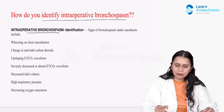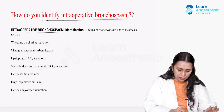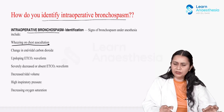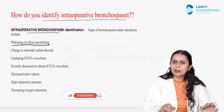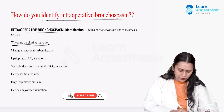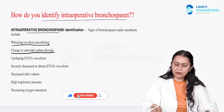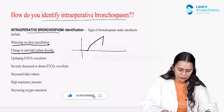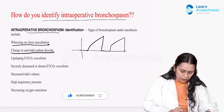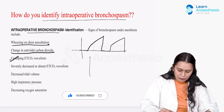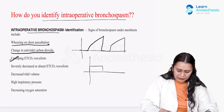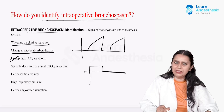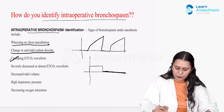Intraoperative bronchospasm identification: wheezing on chest auscultation — we would hear a wheezing sound. There would be a change in end-tidal CO2, with upsloping of the plateau phase. There is also the possibility of severely decreased or absent EtCO2 in complete obstruction.